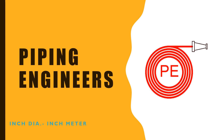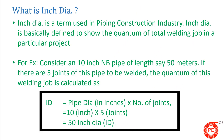What is inch dia? Inch dia is one of the basic terms used in the construction industry. It is used to tell the quantum of welding job — basically to define the total quantum of welding work. It tells how much welding has to be done in a project, how much has been done, and how much is left.